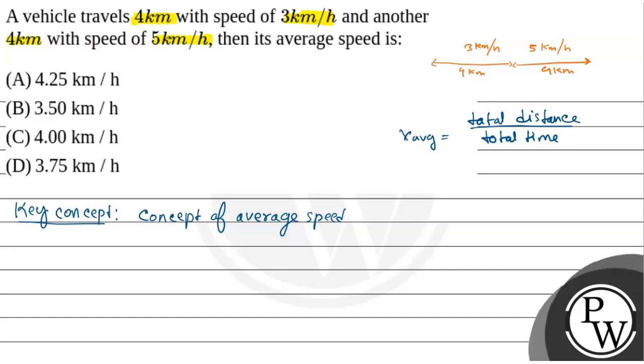Okay. Now, according to the question, D1 is equal to 4 km. We divide this path. D1 is 4 km and the velocity V1 is equal to 3 km per hour.